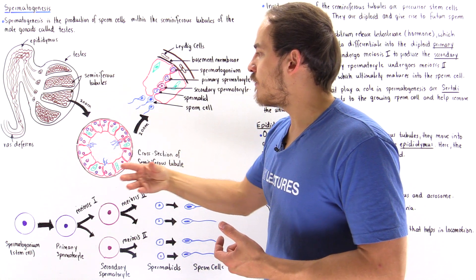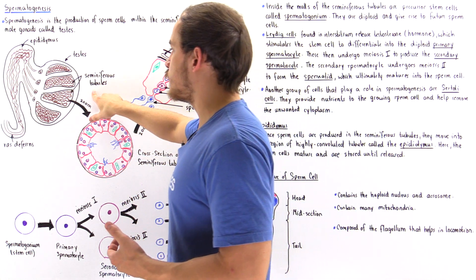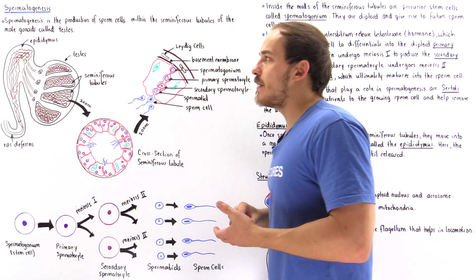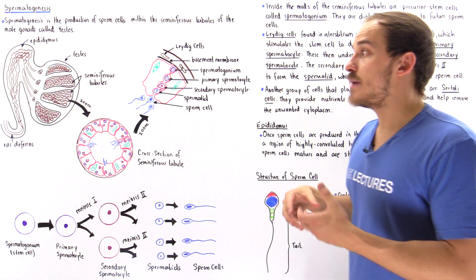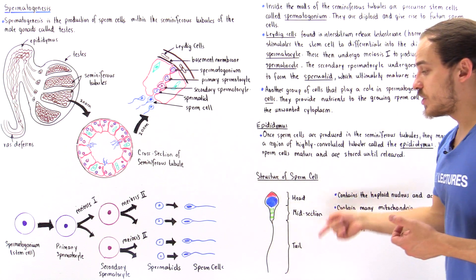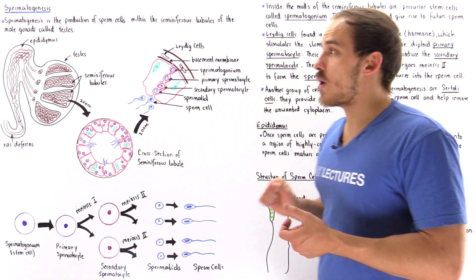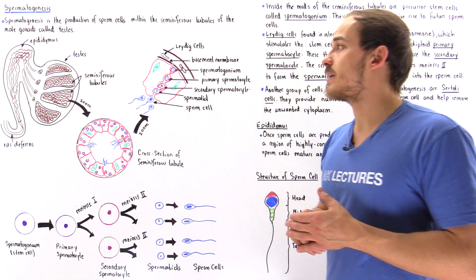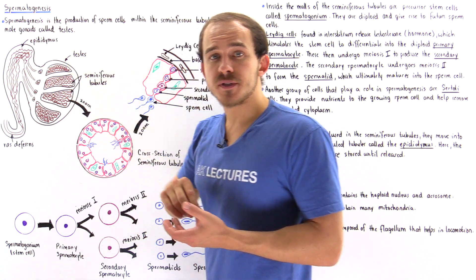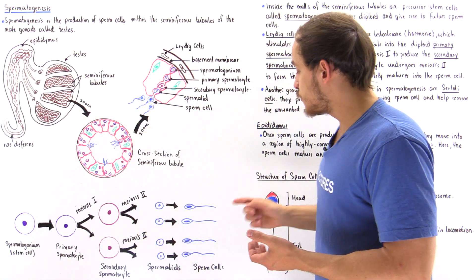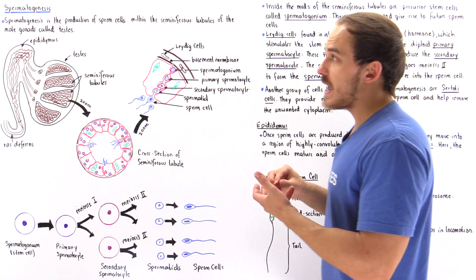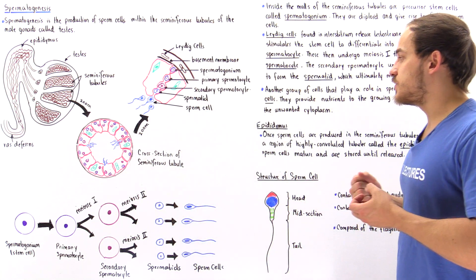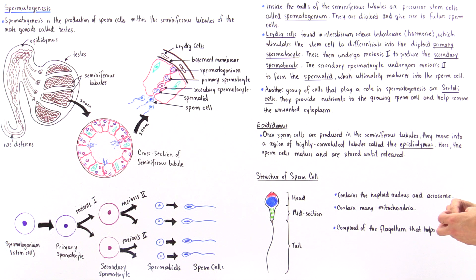The sperm cells travel along the lumen of the seminiferous tubule and eventually end up in the epididymis. Once inside the epididymis, this is where they mature into fully developed sperm cells. The epididymis also serves to store those sperm cells before they are released to the outside environment.